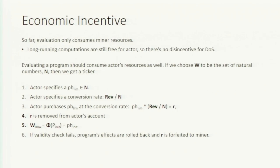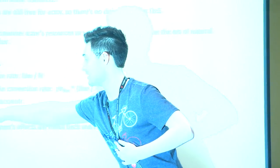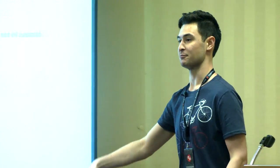When you deploy a program, you specify a phlogiston limit — ph. We've chosen flow to be from the set of natural numbers. A conversion rate maps from rev to natural numbers, so when you multiply ph-limit by the conversion rate you get the amount of rev debited from your wallet to pay for the computation. Once you've purchased the flow you set your initial balance and proceed with the termination proof.